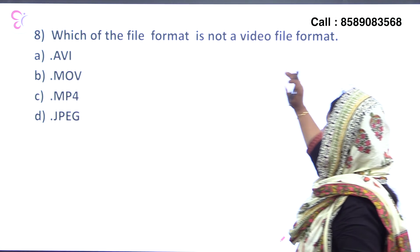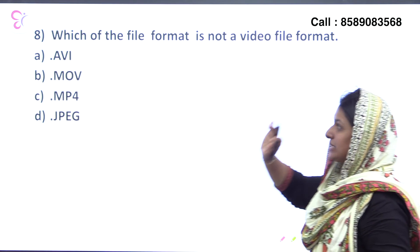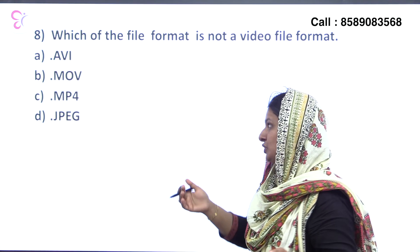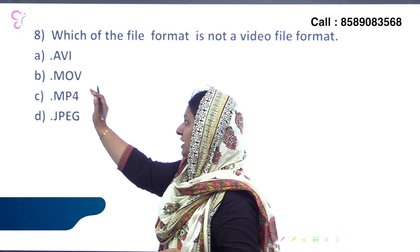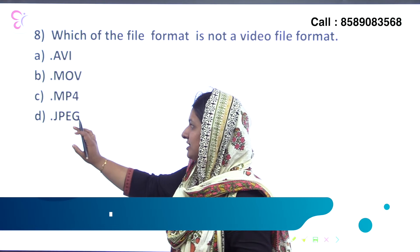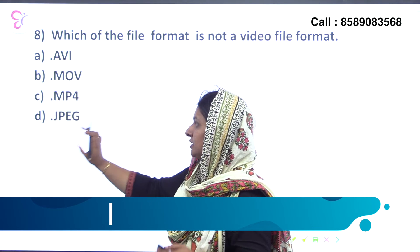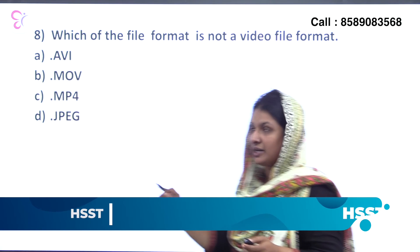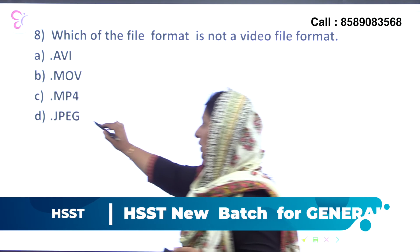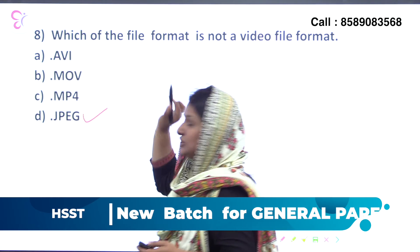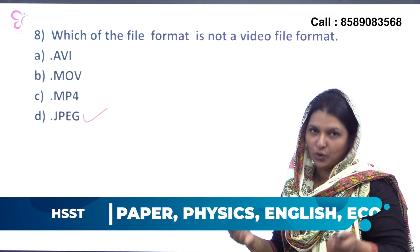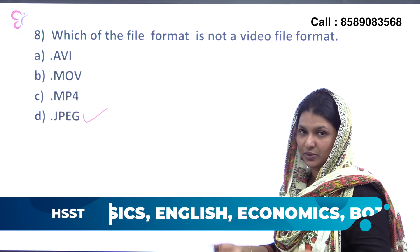Eighth question: which of the following file formats is NOT a video file format? The options are .avi, .mov, .mp4, and .jpeg. The answer is .jpeg — this is an image file format, not a video file format. The others (.avi, .mov, .mp4) are all video file formats.